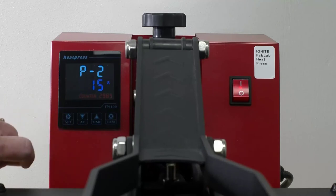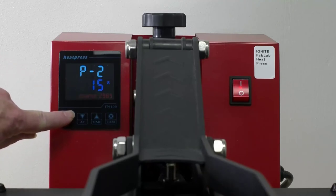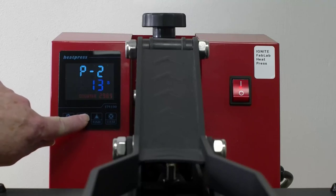The P1 setting is the temperature, which I'm keeping at 310. The P2 setting is the time setting. I'm going to use the down arrow to decrease it to 10 seconds.